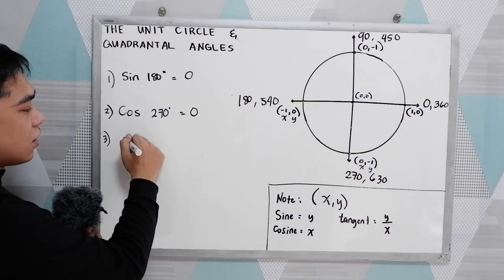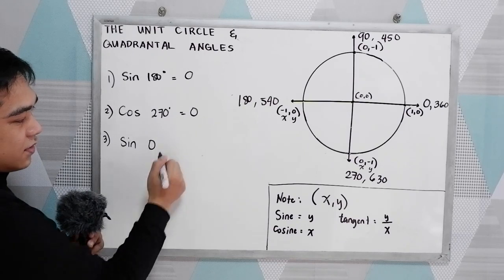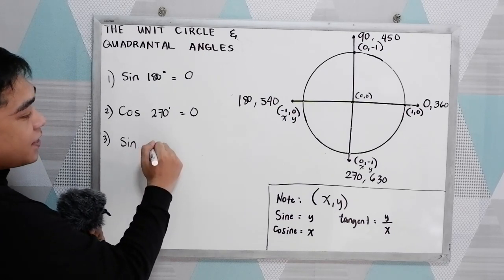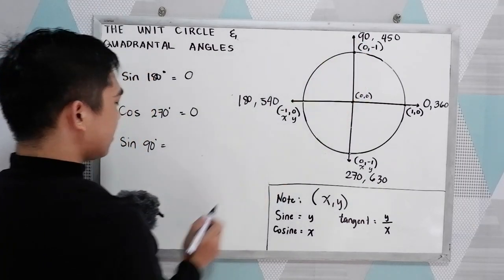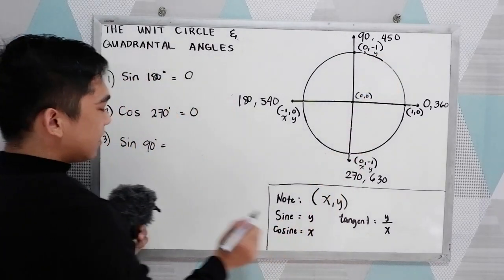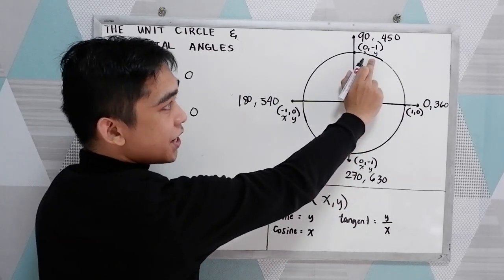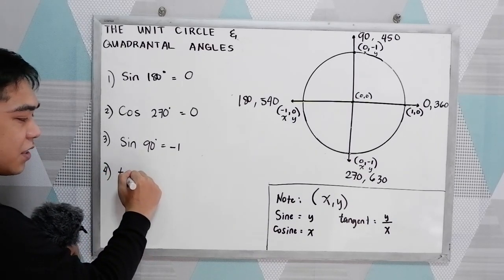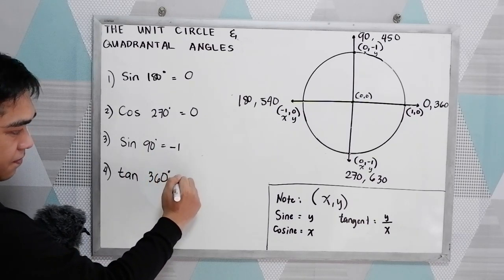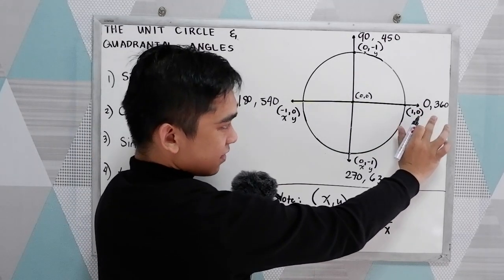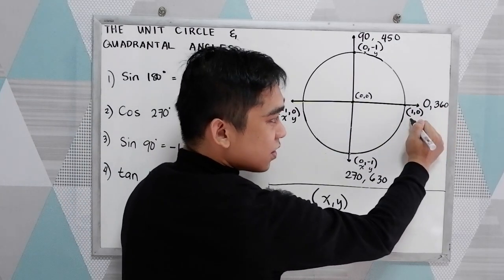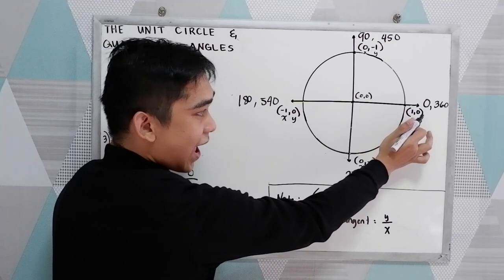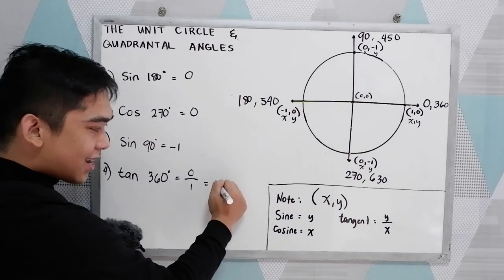Number 3: sine 90°. Locate 90°, so this is our x and y. Sine indicates our y. So y here is 1. So sine 90° = 1. For example 4, find the value of tangent 360°. Tangent is y over x. So y is 0, over x is 1. 0 over 1 — that is 0.